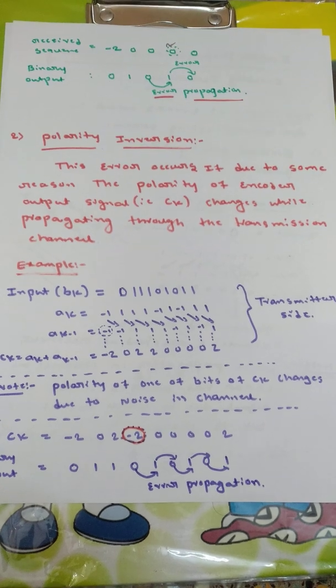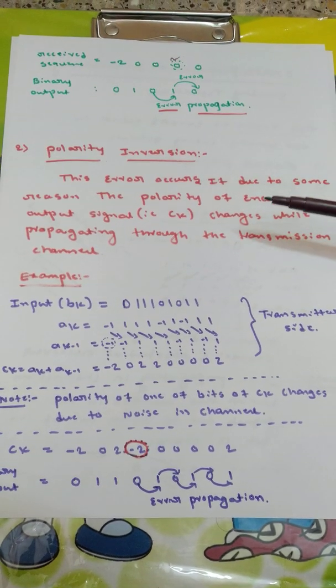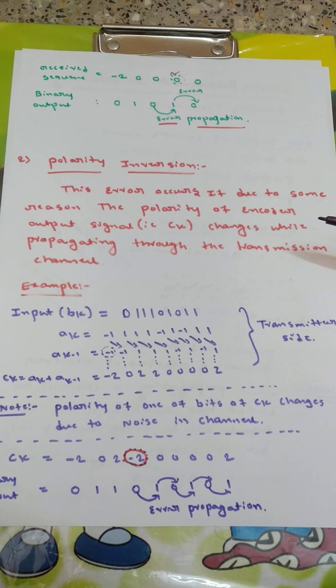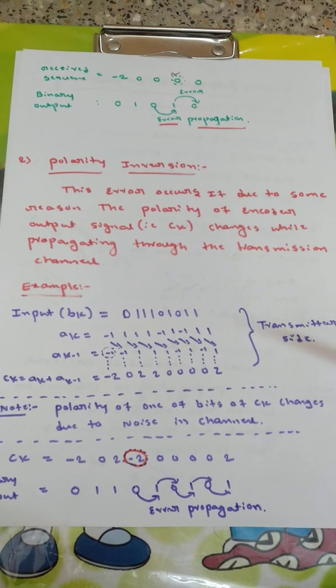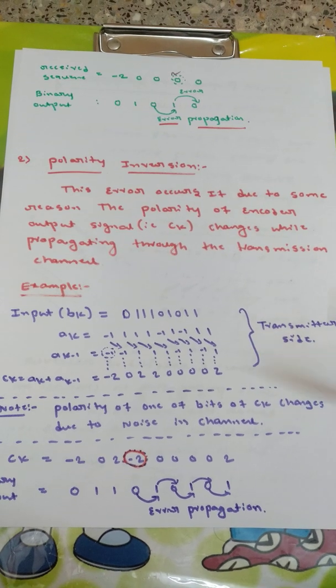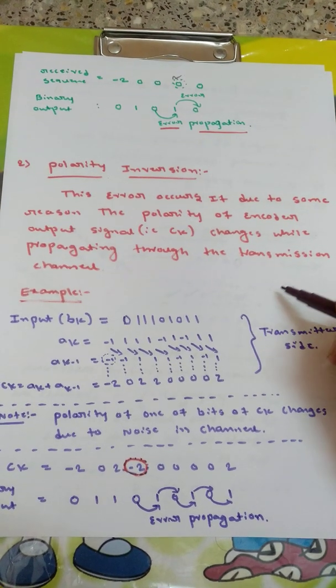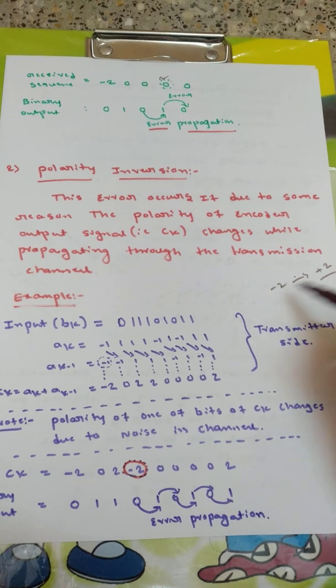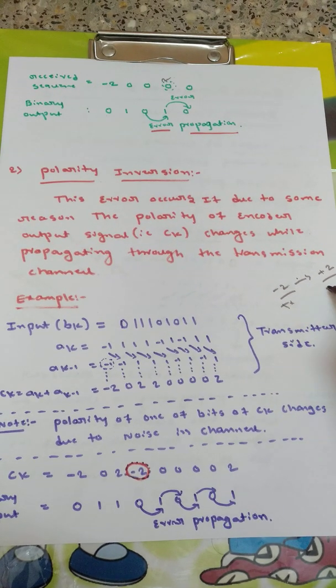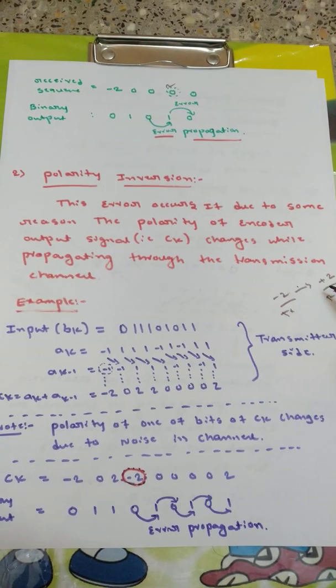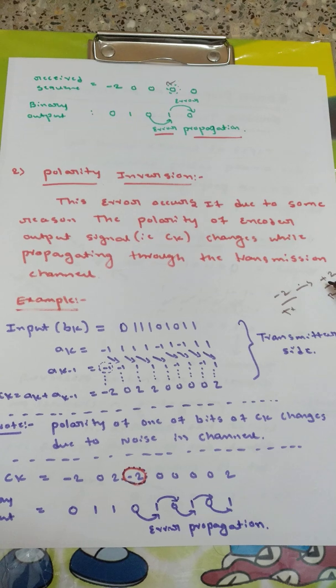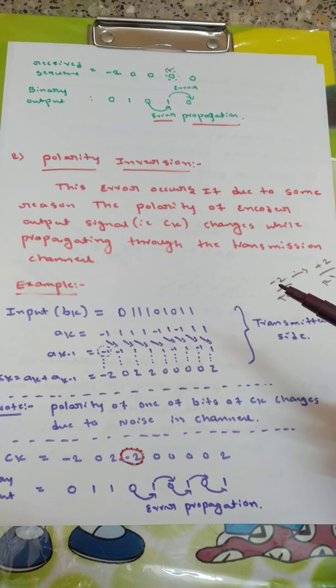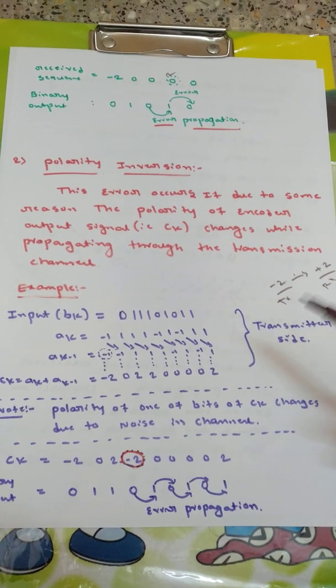Now we will be talking about polarity inversion. This error occurs if due to some reason the polarity of encoder output signal, that is CK signal, changes while propagating through the transmission channel. Basically this error is about positive and negative value. Polarity means positive and negative. Suppose we have transmitted minus 2 and we will be getting plus 2 at the receiver. This change is called as polarity change or polarity inversion, where negative is converted to positive or positive is converted to negative. Basically there should be a change in the sign of a bit rather than its magnitude. That's called polarity inversion.